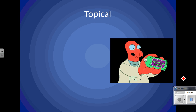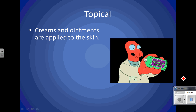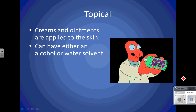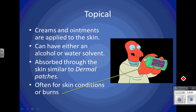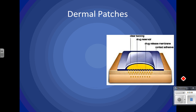Topical delivery involves creams and ointments applied to the skin. You can have either an alcohol or a water solvent, and they're absorbed through the skin — similar to dermal patches. They're often for skin conditions or burns. Creams are water-based and ointments are oil-based — that's something worth knowing and remembering.